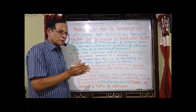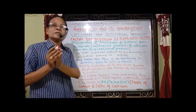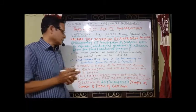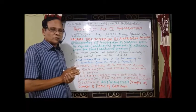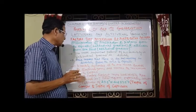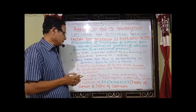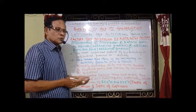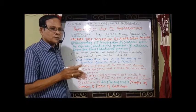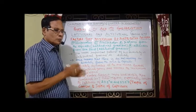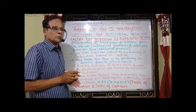In comparison: poles have fewer species, temperate regions have somewhat more, and the tropics have the maximum number of species. The number of tree species increases from the poles to the temperate zones and then to the tropical regions.